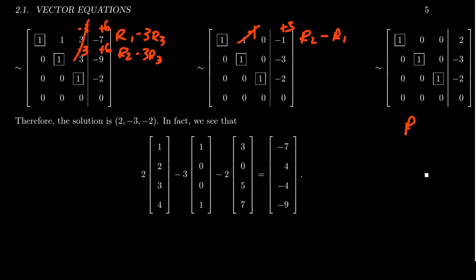So this right here is our row reduced echelon form. From this, we can see the solution is exactly going to be x1 is 2, x2 is negative 3, and x3 is negative 2, as illustrated right here. These are the coefficients of the linear combination. Notice if I take 2 times a1, negative 3 times a2, and then negative 2 times a3, that's going to give you the vector b.